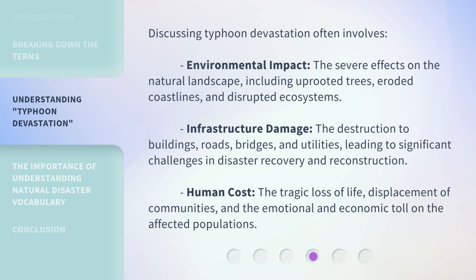Discussing typhoon devastation often involves environmental impact — the severe effects on the natural landscape, including uprooted trees, eroded coastlines, and disrupted ecosystems. Infrastructure damage refers to the destruction to buildings, roads, bridges, and utilities, leading to significant challenges in disaster recovery and reconstruction. Human cost encompasses the tragic loss of life, displacement of communities, and the emotional and economic toll on the affected populations.